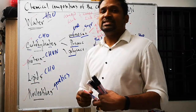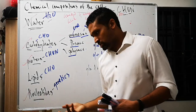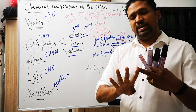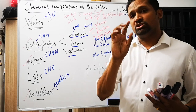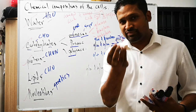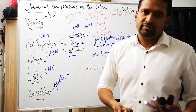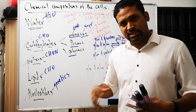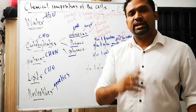Lipids are fats — carbon, hydrogen, oxygen, same elements as carbohydrates. There are four types of lipids. First, fats and oils: sebum is an oil produced by the sebaceous gland in our skin. Fats also surround our organs for protection and are found under skin for insulation.